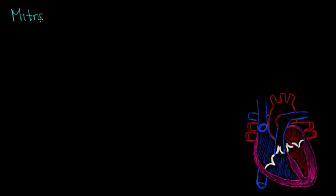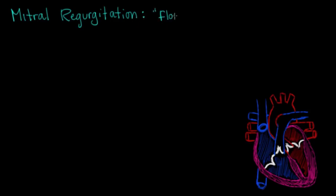So now let's talk about mitral regurgitation. All that really means is that the mitral valve — the valve between the left atrium and left ventricle — is floppy. Here I'm going to mark off the LV, or left ventricle, and then show you the normal path blood takes out of the aortic valve to the aorta and the rest of the body.